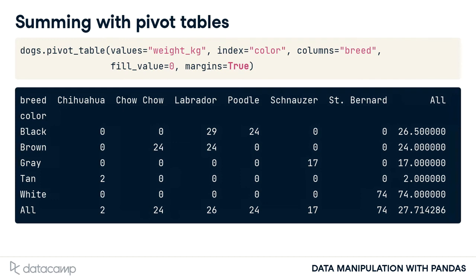The value in the bottom right — the last row and last column — is the mean weight of all the dogs in the dataset. Using margins equals True allows us to see a summary statistic for multiple levels of the dataset: the entire dataset, grouped by one variable, by another variable, and by two variables.